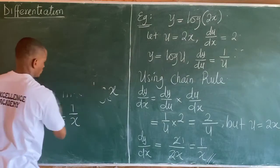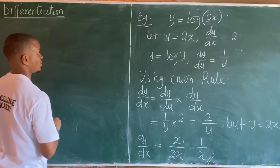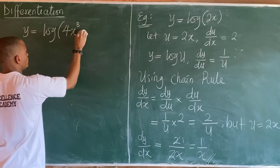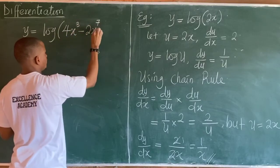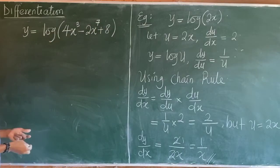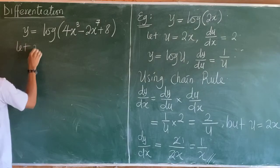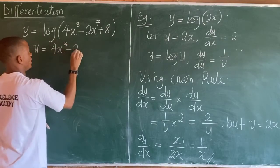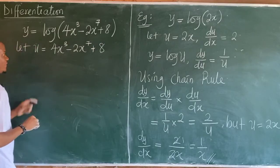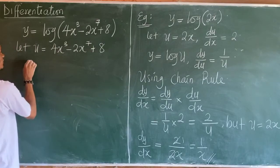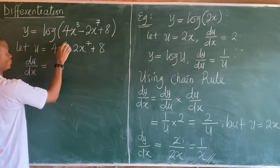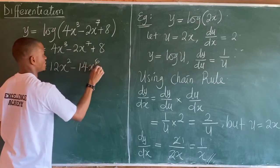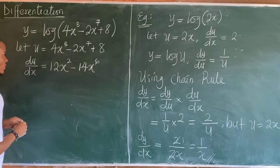We'll take one more example and then look at more complex examples of logarithmic differentiation. Let y equal log of (4x cubed minus 2x to the power 7 plus 8). Let u equal 4x cubed minus 2x to the power 7 plus 8. Differentiating u with respect to x: du over dx equals 12x squared minus 14x to the power 6, with the constant dropping off.